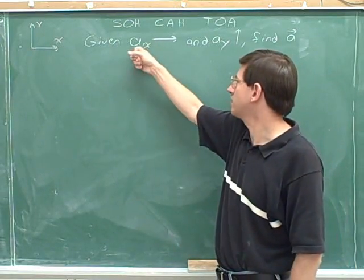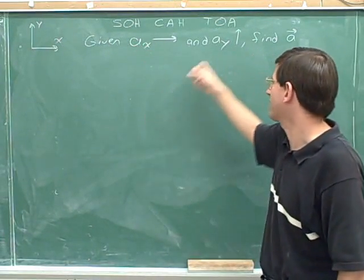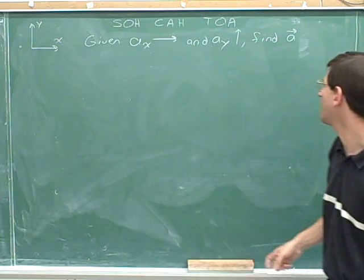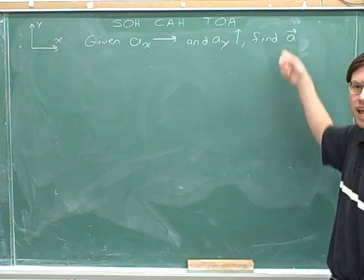Here's a problem. If we're given that this arrow represents a sub x and this arrow represents a sub y, find the overall vector a. Give that a shot.